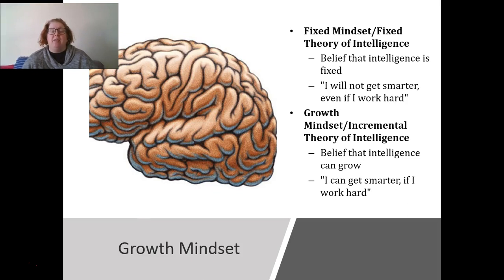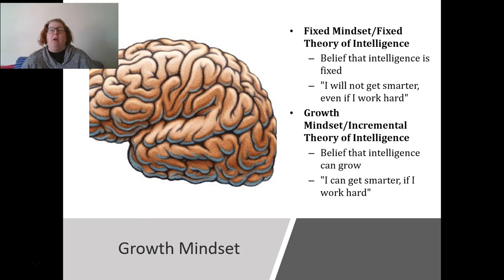Growth mindset talks about two different mindsets — or theories of intelligence — that a child could have. The first is a fixed mindset: the idea that intelligence is fixed, that I will not get smarter no matter how hard I work, and that ability is a stable construct. The second is a growth mindset: the belief that intelligence can grow, that I can get smarter if I work hard. This is a little tricky, because theoretically, intelligence is pretty fixed — you're born with some capacity to learn. I'm going to quibble with the language here a little bit. While our capacity might be limited, I don't think our achievement is necessarily fixed. I can become better at math if I work hard; I can become a better artist if I practice; I can become a better piano player if I practice — and that's true for everyone.